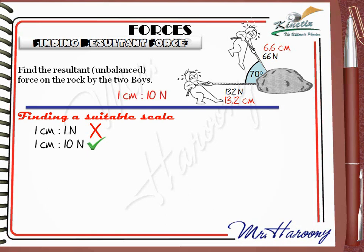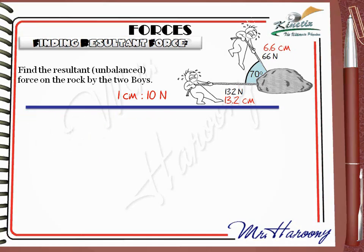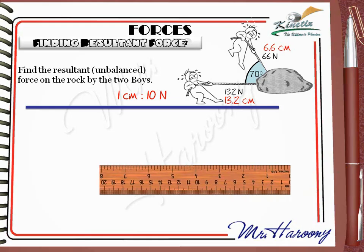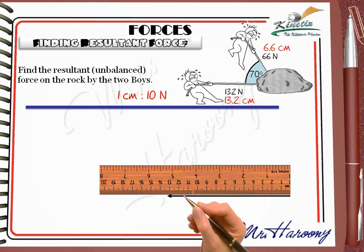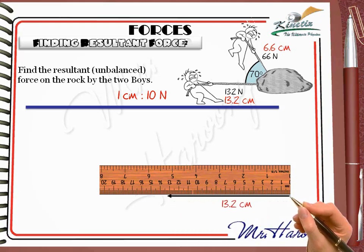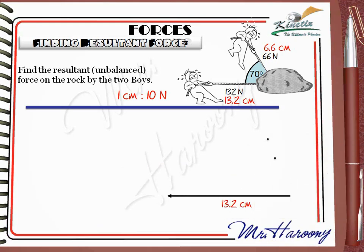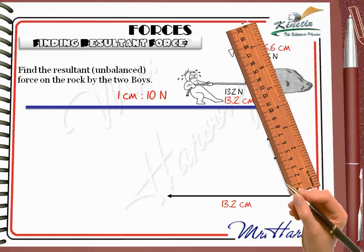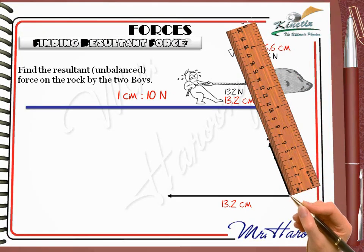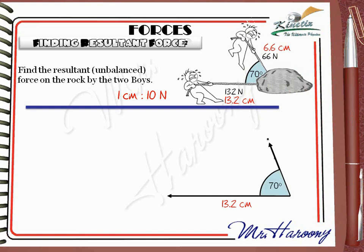Our reference line will be the horizontal 132 N force. Bring the ruler and, using your sharp pencil, draw a line of 13.2 cm long. Now use your protractor to measure the angle of 70 degrees. Get the ruler again and draw the second force represented by 6.6 cm, keeping the 70 degrees angle between the two arrows.